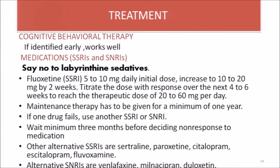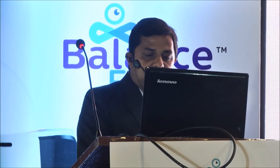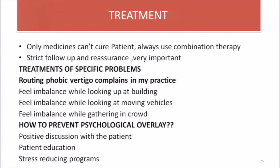Cognitive behavioral therapy works well if identified early. Regarding medications, SSRIs and SNRIs are used — say no to labyrinthine sedatives. For fluoxetine, start with a lower dose of 5–10 mg daily, increase to 10–20 mg by two weeks, then titrate over 4–6 weeks to a therapeutic dose of 20–60 mg. Maintenance therapy should be given for a minimum of one year depending on response. If one drug fails, use another SSRI or SNRI; wait a minimum of three months before deciding on non-response. Alternative SSRIs include sertraline, paroxetine, citalopram, escitalopram, and fluvoxamine. Alternative SNRIs include venlafaxine, milnacipran, and duloxetine. Remember: medication alone cannot cure the patient — always use combination therapy. Strict follow-up and reassurance are also very important.